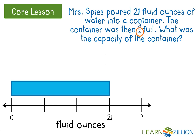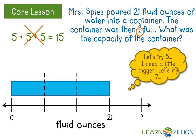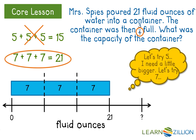Now again I can see that the 21 ounces have been divided into three equal groups, so I have to figure out how much each section is worth. Let's pretend I didn't know my division facts — I could guess and check to determine which number goes into each box. Let's try five: five plus five plus five equals 15, which is not enough. I need something a little bit bigger. Let's try seven: seven plus seven plus seven equals 21. Yes, it works! So each tick mark on my number line is going to be worth seven fluid ounces.